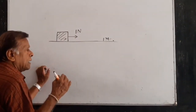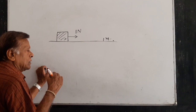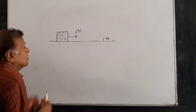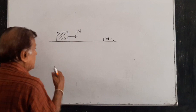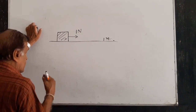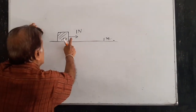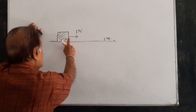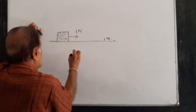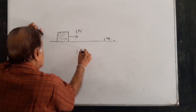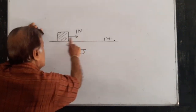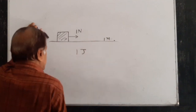Work done is actually said to be 1 Joule. Joule is the SI unit of work, and also the SI unit of energy is also Joule, because you are doing 1 Joule of work when you are pulling this from here to here, a distance of 1 meter.